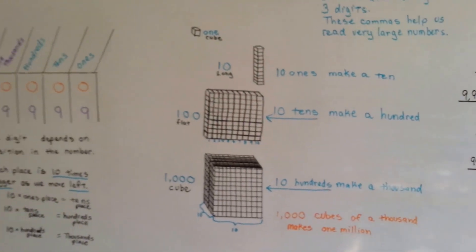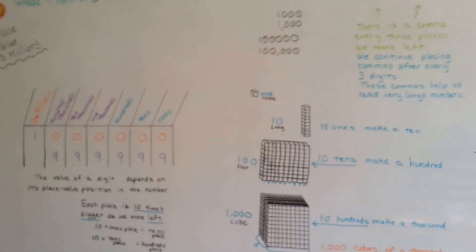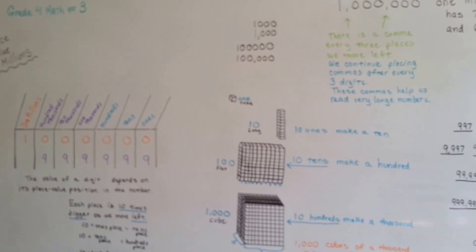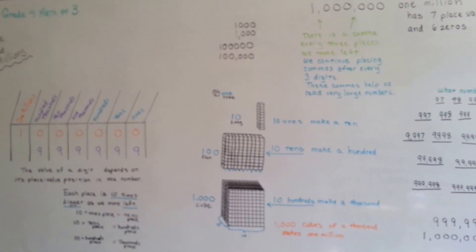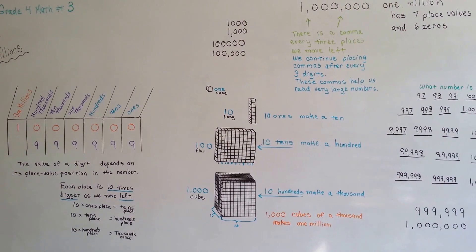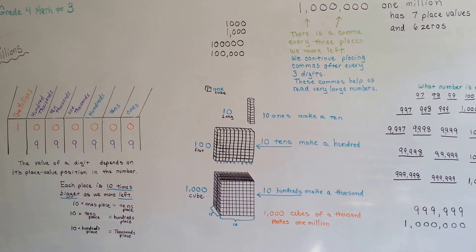A million is quite a big number. That's why people are happy when they have a million dollars. That is Place Value to Millions and I'll see you next video. Bye.